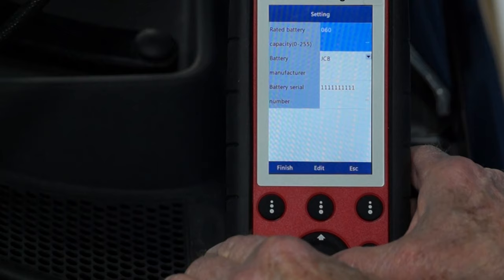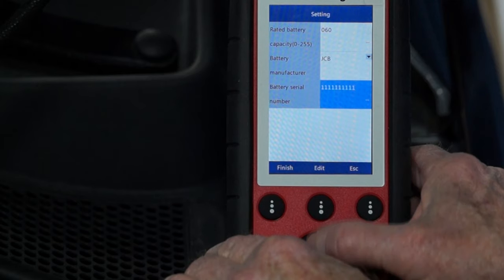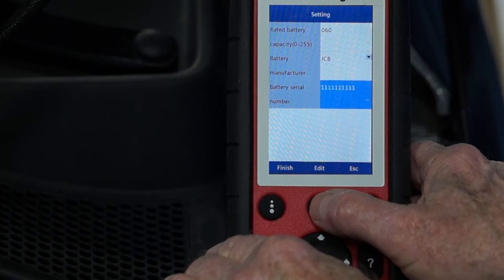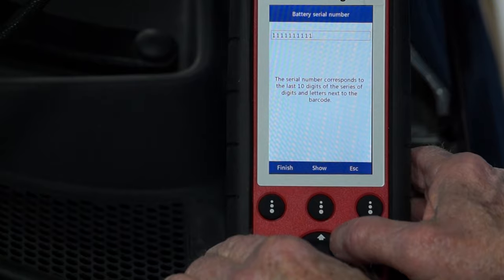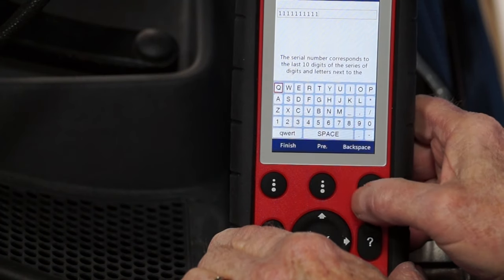We can see that the old battery was 60 amps. If we were to put in a larger amp hour battery, we could change that here. The manufacturer was JCB. The new battery manufacturer is the same. So now we'll move down to the serial number. And this is actually the serial number that the vehicle has stored for the old original equipment battery. And we'll choose edit. And now we'll put in the new serial number.